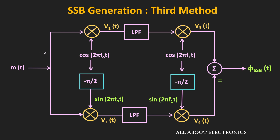There are two arms. In one arm, the carrier signal is directly given to the balance modulator, while in the other arm, first a minus 90 degree phase shift is provided to the carrier signal and then it is given to the balance modulator. The first carrier signal is in the audio frequency range, while the second carrier signal F1 is in the radio frequency range.